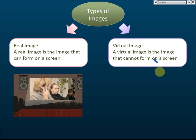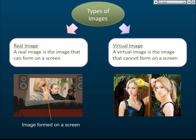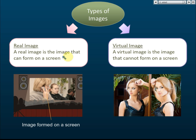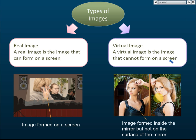A virtual image is the image that cannot form on a screen. For example, with a mirror — the image is not on a screen; the image is inside the mirror. If you stand one meter from the mirror, the image appears to be one meter inside the mirror. It's not on a screen, so this type of image is called the virtual image.